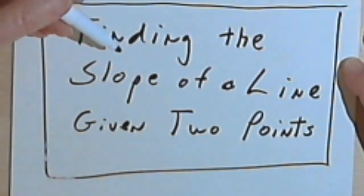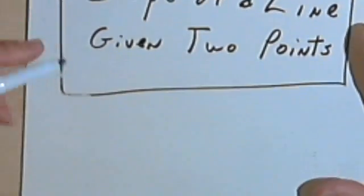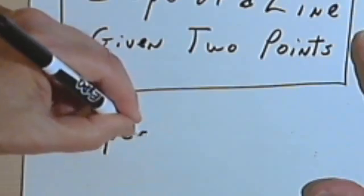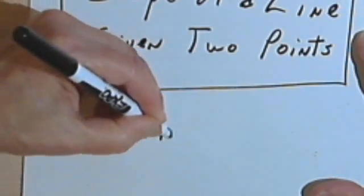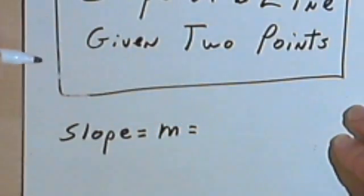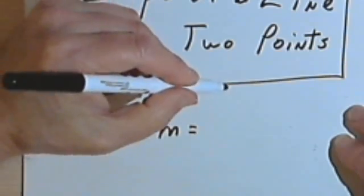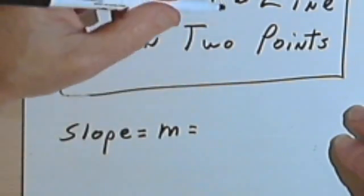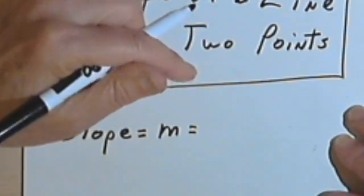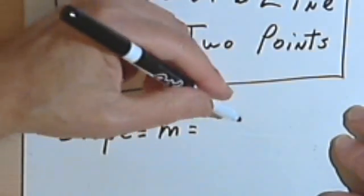Okay, this video is going to be about finding the slope of a line when you're given two points. So we want the slope, and remember sometimes the slope is indicated with the letter M. I have no idea why they chose M. And the slope is a way of expressing how high up or down we go from one point to another, compared to how far over from left to right we go from the first point to the second point.